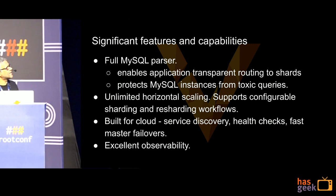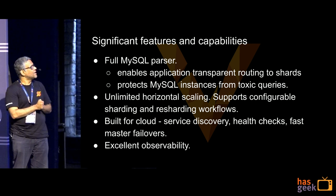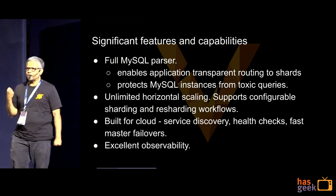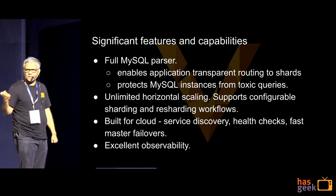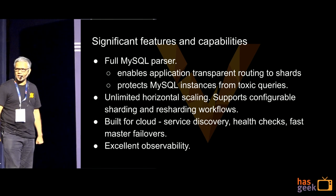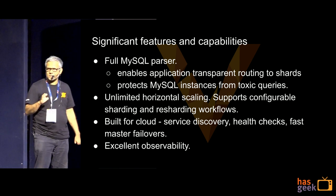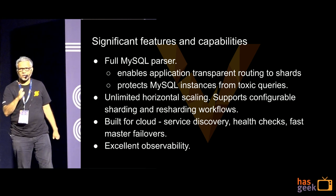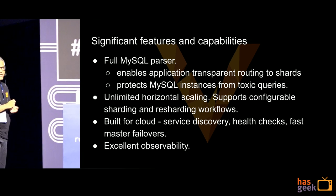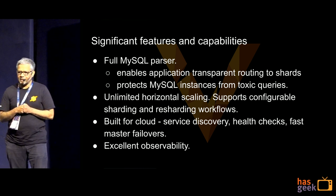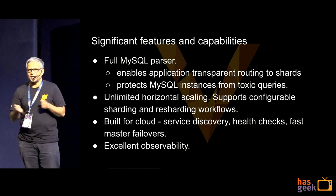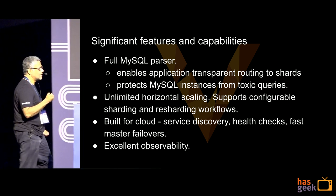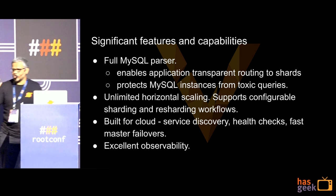Let's talk about a few of the features and capabilities. Vitess has a full MySQL parser built into it, which enables transparent routing to shards. This ability to give your application the view that it's talking to a single humongous database, and not a sharded database, is because we have a full parser. We also protect MySQL instances from proxy queries using the parser — by adding limit clauses to queries and doing a lot of other things. And Vitess provides unlimited horizontal scaling. We know at least one company that uses 1,024 shards, and we see no reason you couldn't run 2,048.